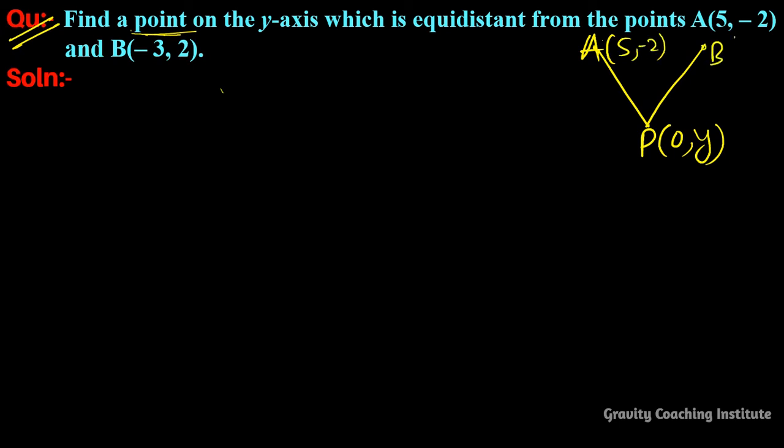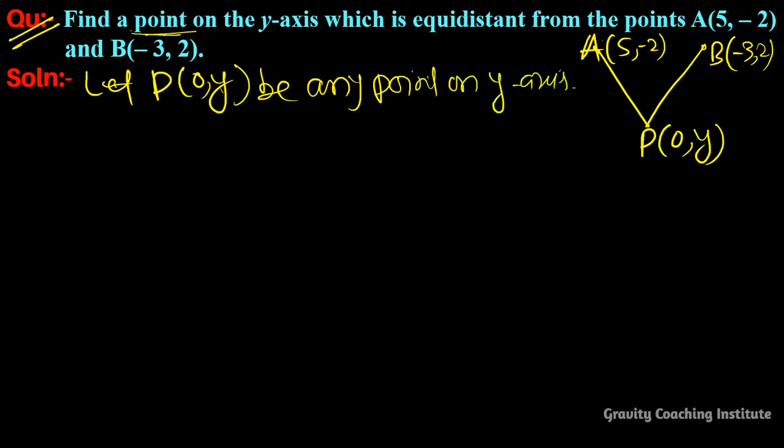Let P(0,y) be any point on y-axis, so we have x-coordinate 0 because on y-axis the x-coordinate is always 0.